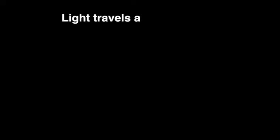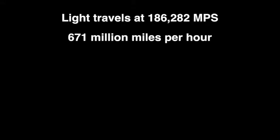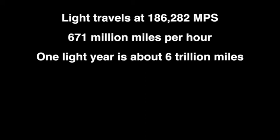The scientific fact is this: light travels at 186,282 miles per second, or about 671 million miles per hour. One light year, which is actually a measurement of distance and not time, is the distance light can travel in one year and is about 6 trillion miles.